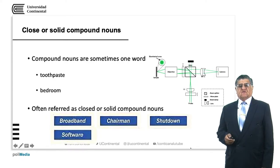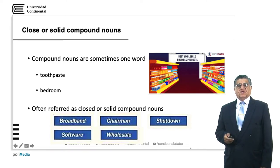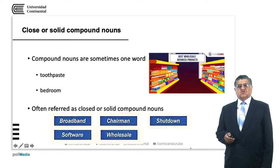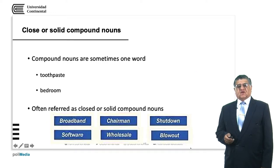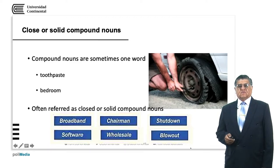Software — 'soft' means it doesn't have a solid composition. Software is the name we give to products or programs used in computing and communication. 'Wholesale' — whole means everything, sale is something you buy or purchase. Wholesale is to sell everything in a store or department store. And 'blowout' — a blowout is something that explodes. For example, a tire: the tire has blown out, so it lost all the air inside it because of any type of accident.